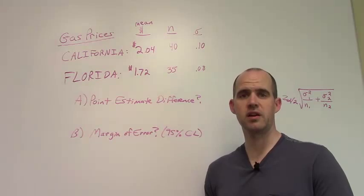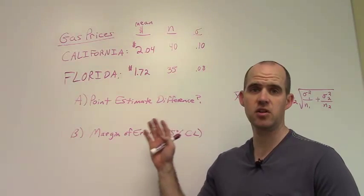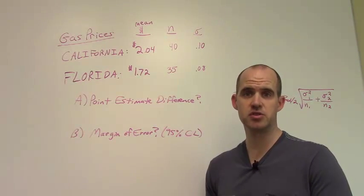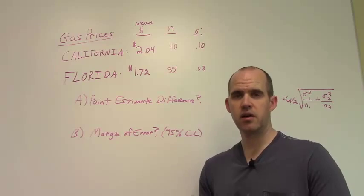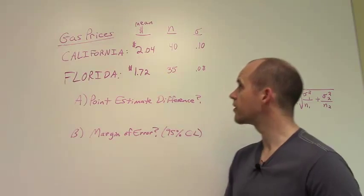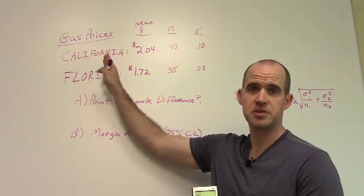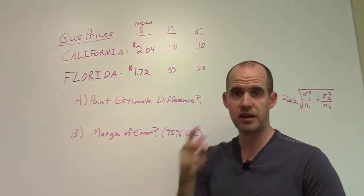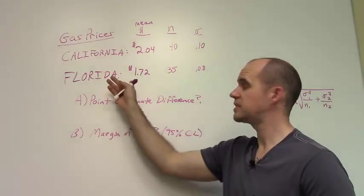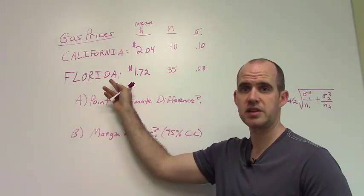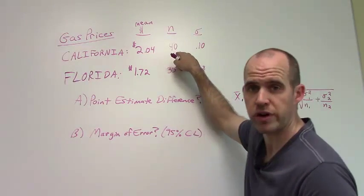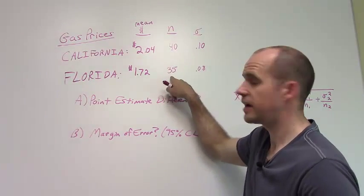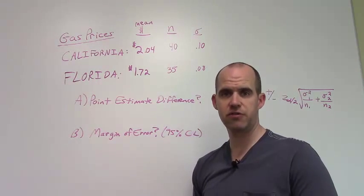I'm going to do an example for an interval estimate when we're taking a look at the difference between two sample means. Let's think about what we're actually doing here. For example, in this particular example, I'm looking at the mean gas price in California at a given period of time, and within that same period of time, I'm looking at Florida's gas price. Notice that we've taken a sample of 40 gas stations in California and a sample of 35 in Florida.